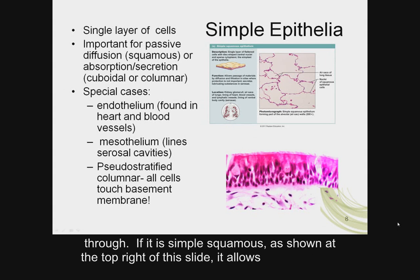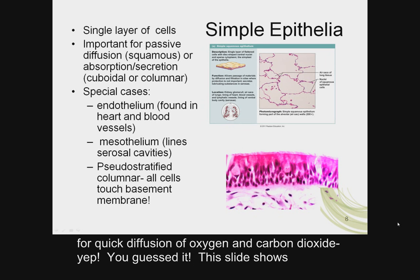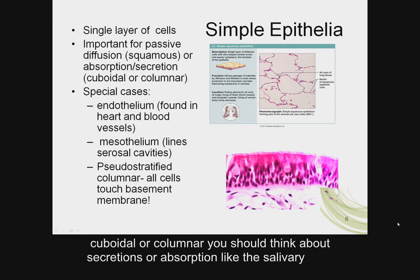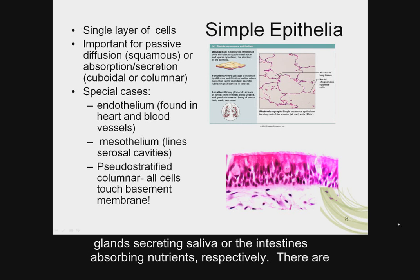If it is simple squamous, as shown at the top right of this slide, it allows for quick diffusion of oxygen and carbon dioxide — this slide shows simple squamous epithelium lining the alveoli of the lung. If the tissue is simple cuboidal or columnar, you should think about secretions or absorption, like the salivary gland secreting saliva or the intestines absorbing nutrients, respectively.